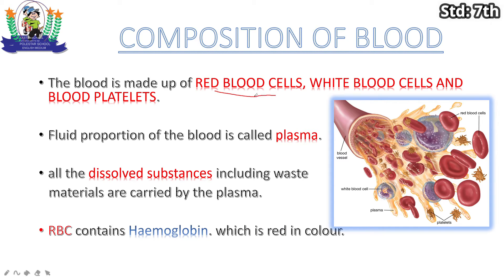Blood is made up of red blood cells, white blood cells, and platelets. Here you can see the red color which represents red blood cells, and white blood cells which are very small structures. Platelets are also present, along with plasma, which is the fluid portion of blood.